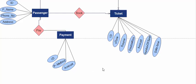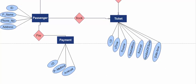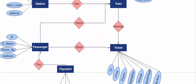So that was the ER diagram for an online railway reservation system. If you liked the video, please subscribe to our YouTube channel, and thanks for watching.